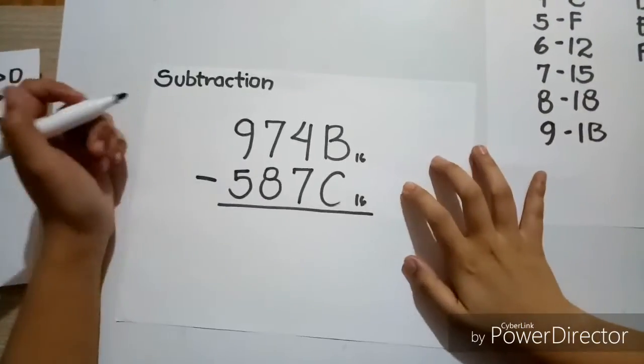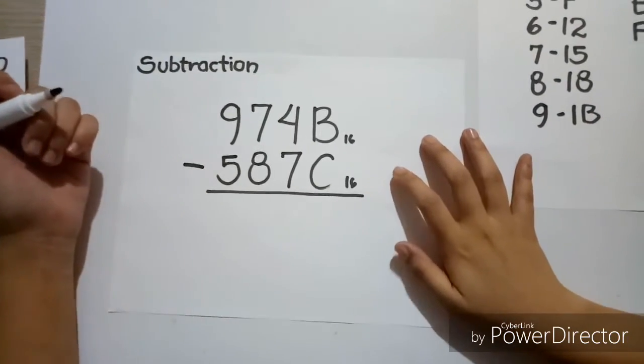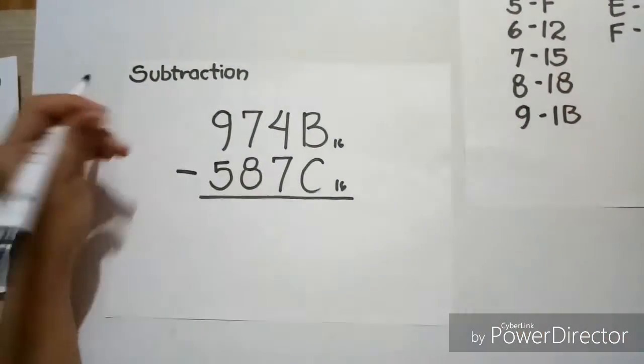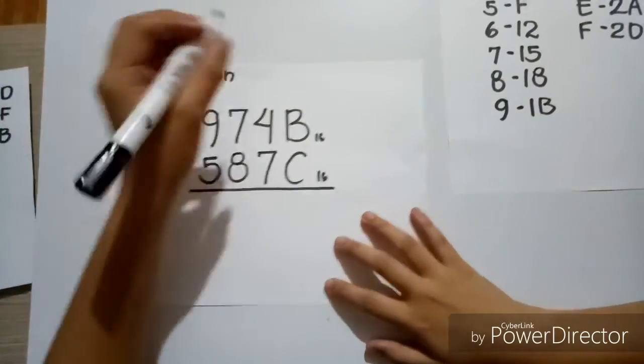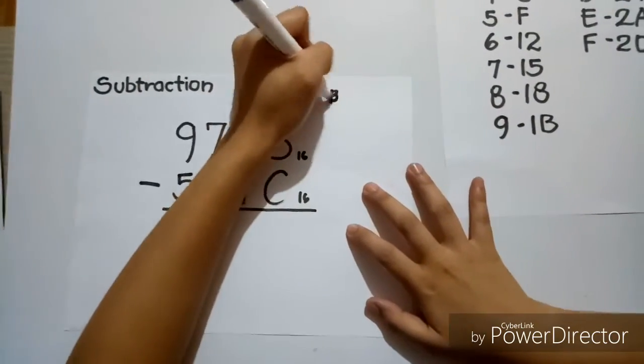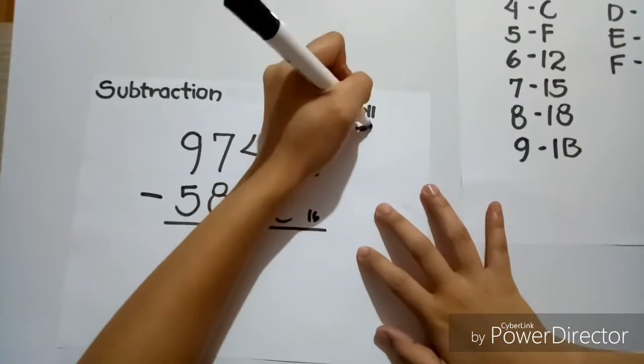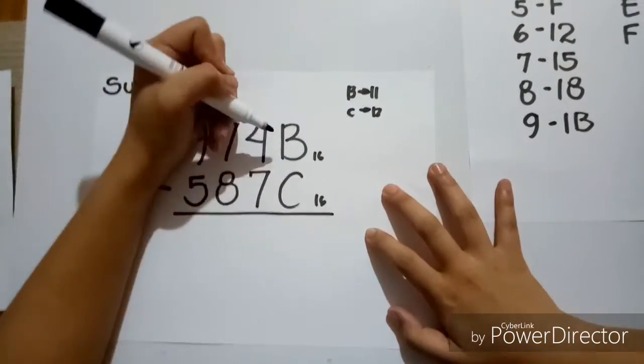Now, for the subtraction, let's have 974B base 16 minus 587C base 16. Since B is equal to 11 and C is equal to 12, we cannot subtract C from B, so we'll have to borrow.